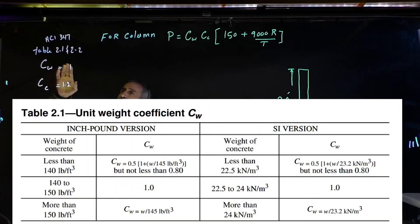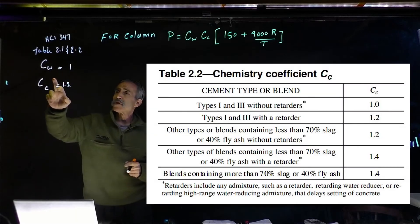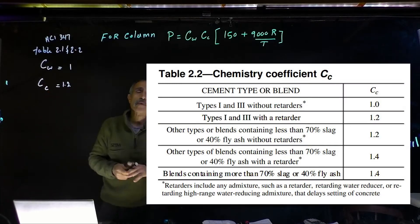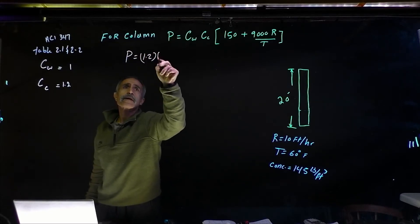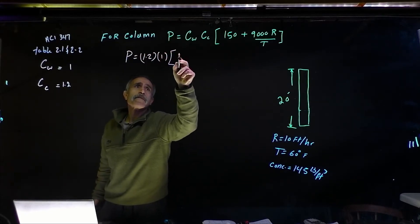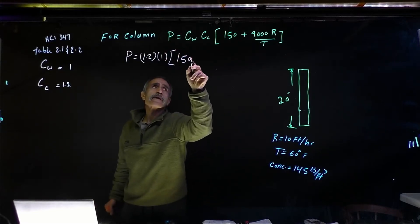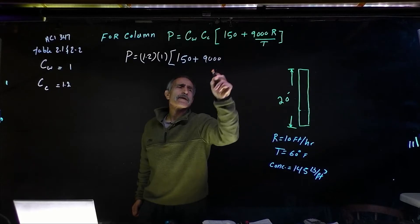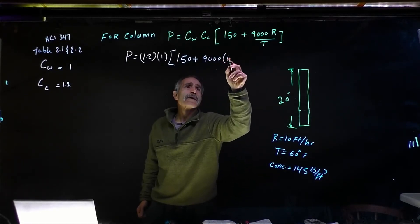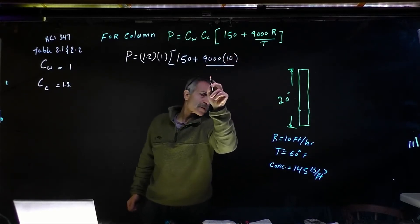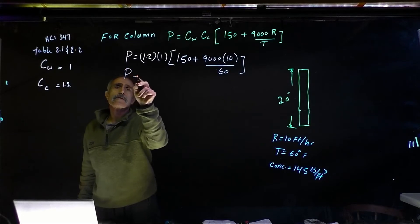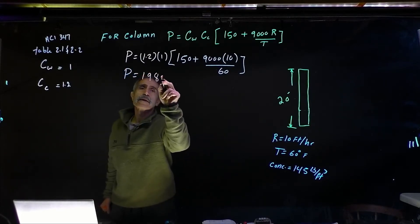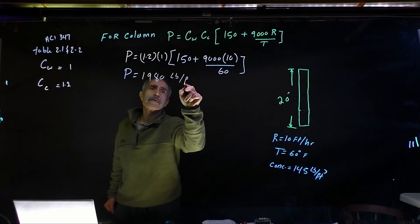From ACI 347 table 2.1 and 2.2 which is on our board right now, the weight coefficient Cw is equal to 1 and the chemistry coefficient Cc is equal to 1.2. So therefore our pressure is going to come out to equal 1.2 times 1 multiplied by 150 plus 9,000, the rate came out to be 10 feet per hour, divided by the temperature of 60 degrees. That will give me pressure equal to 1,980 pounds per square foot.